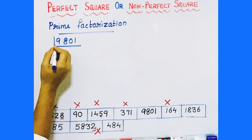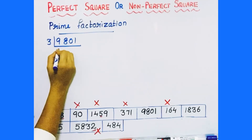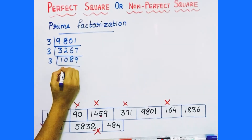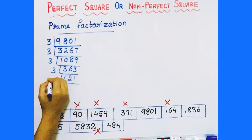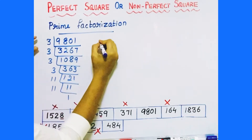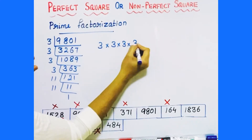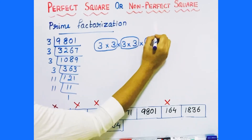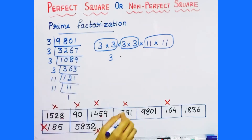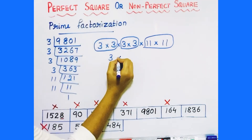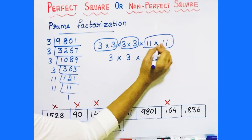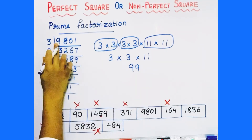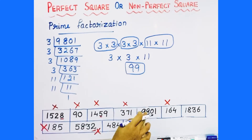Let's take the first number, 9801, and do prime factorization. Divide by prime numbers — divide by 3: it is 3267. Divide by 3 again: 1089. Divide by 3: 363. Divide by 3: 121. It goes with the 11 table: 11 is a prime number, so stop. Now list the factors: 3 into 3 into 3 into 3 into 11 into 11. Make pairs — all prime numbers have a pair. So it is a perfect square. Taking one from each pair: 3 into 3 into 11 equals 99. So 99 squared is 9801 — this number is confirmed as a perfect square.